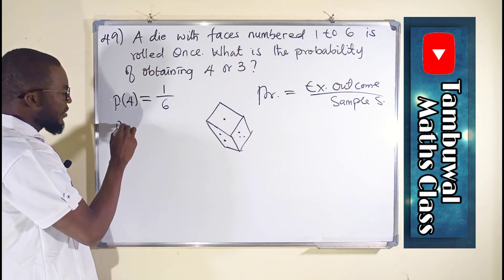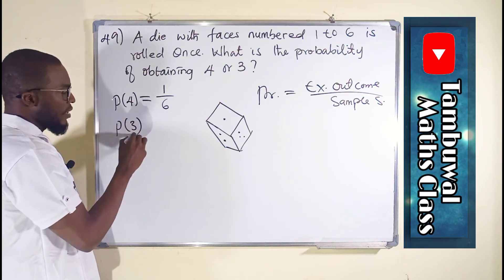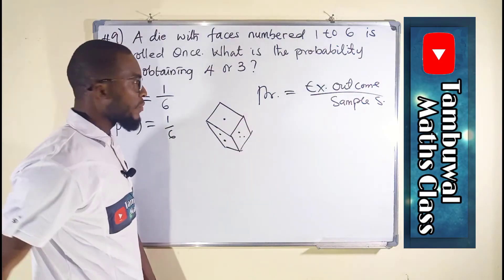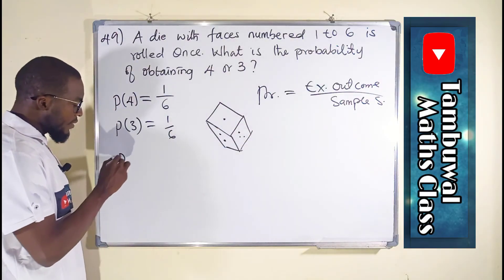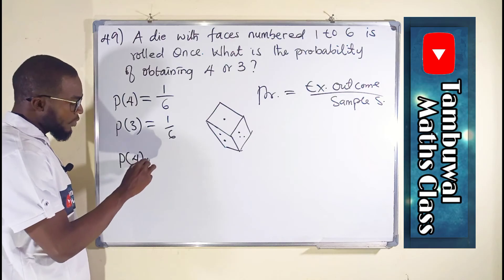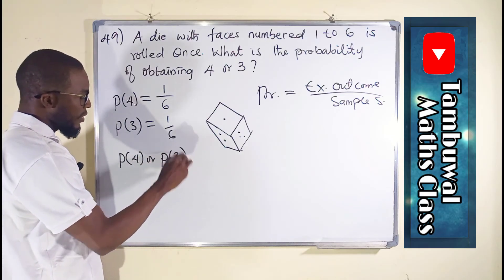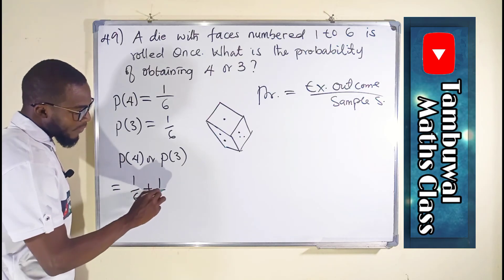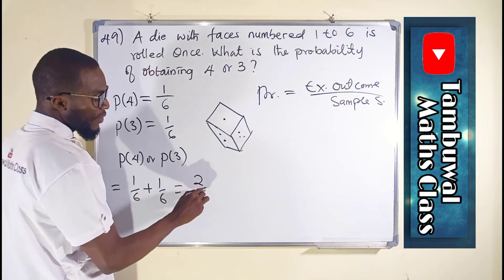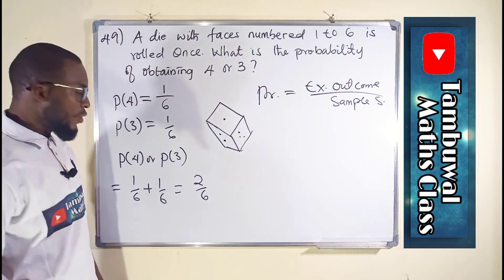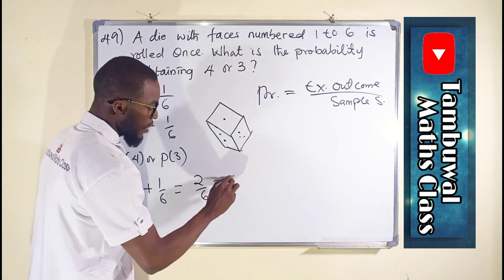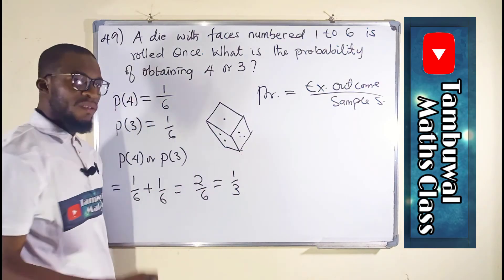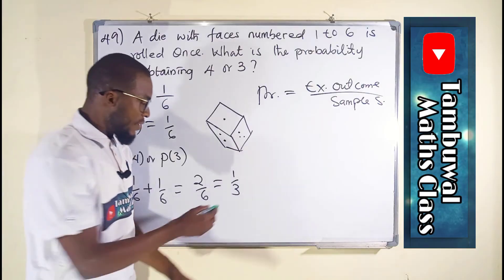The probability of obtaining 3 is also 1 over 6, because we have only one 3 here. So the probability of 4 OR probability of 3 equals 1/6 plus 1/6, which equals 2/6. Reducing to the lowest term, it becomes 1/3, because 2 goes into 2 one time and 2 goes into 6 three times. This is our answer.